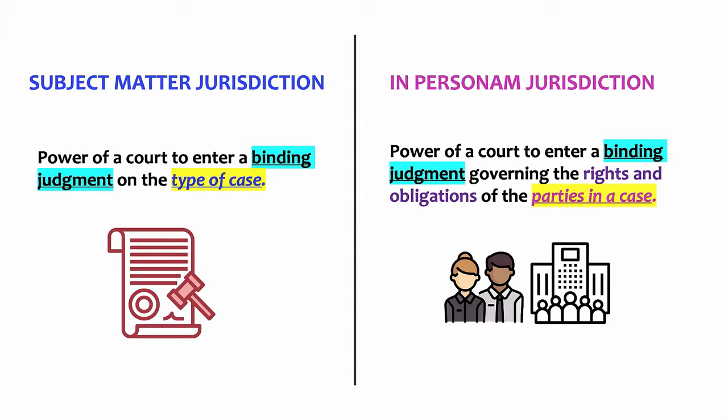Whereas in personam jurisdiction involves the ability of a court to legally bind the defendant to its decision, to its judgment, whether that defendant is a person, a corporation, or any other type of entity. It's the power of a court to enter a binding judgment governing the rights and obligations of the parties in the case. So if you were to receive a letter from a court in Zimbabwe telling you to pay Ted Smith $10,000, you would wonder what gives that court the power to enforce this decision upon you. What gives the Zimbabwe court the power to tell me what to do or who to pay? Well, this is what we're going to explore.